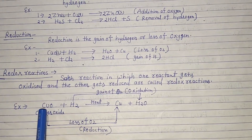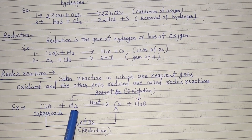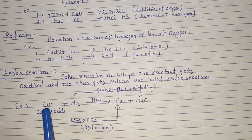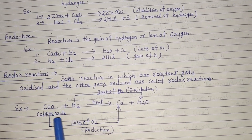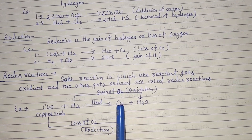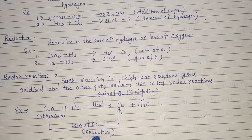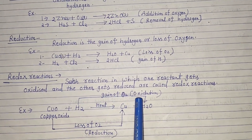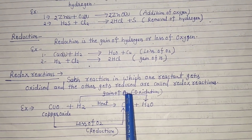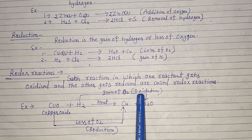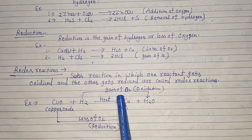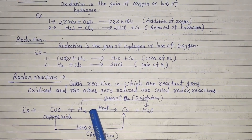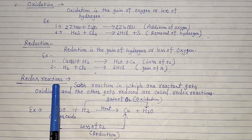For example: copper oxide plus hydrogen, when heated, gives copper plus water. Copper oxide loses oxygen — loss of oxygen is reduction. Hydrogen gains oxygen — gain of oxygen is oxidation. So reduction and oxidation both occur together, which is known as a redox reaction.